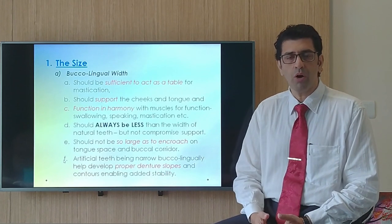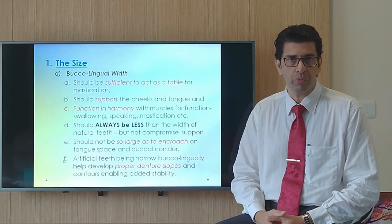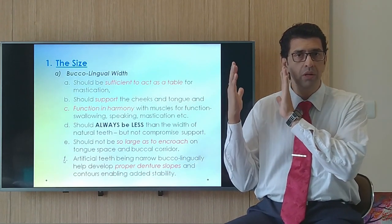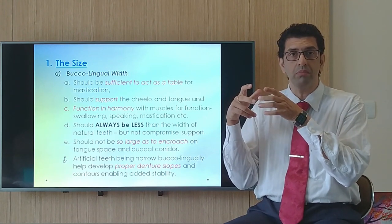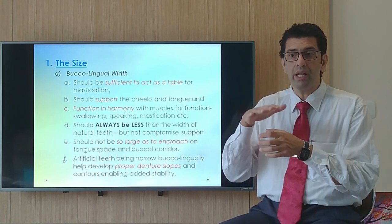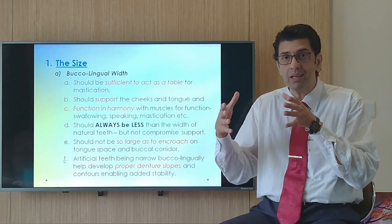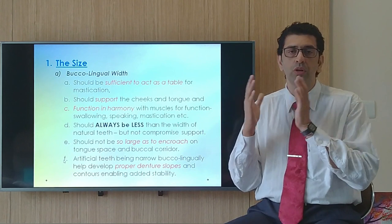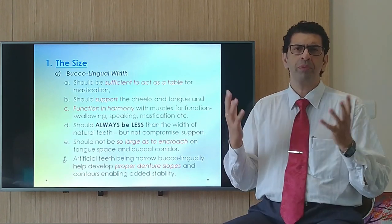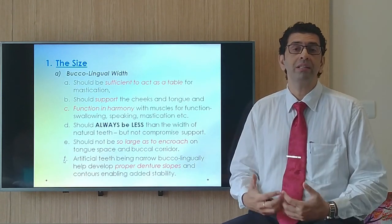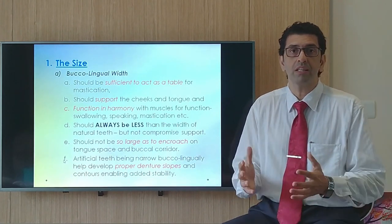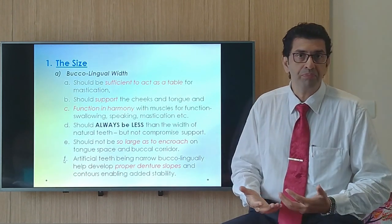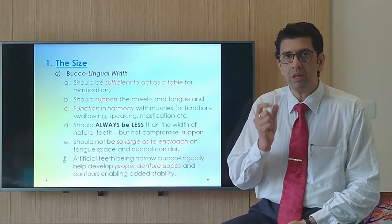Starting with size — specifically the buccolingual width. This is the width of the tooth from the lingual to the buccal. The width of the occlusal table is important to provide adequate mastication. It should support the cheek and the tongue — if it doesn't, the cheek will have a sunken appearance. It also needs to function in harmony with the surrounding tissues without impinging or constricting them, allowing the patient to speak, swallow, and chew.